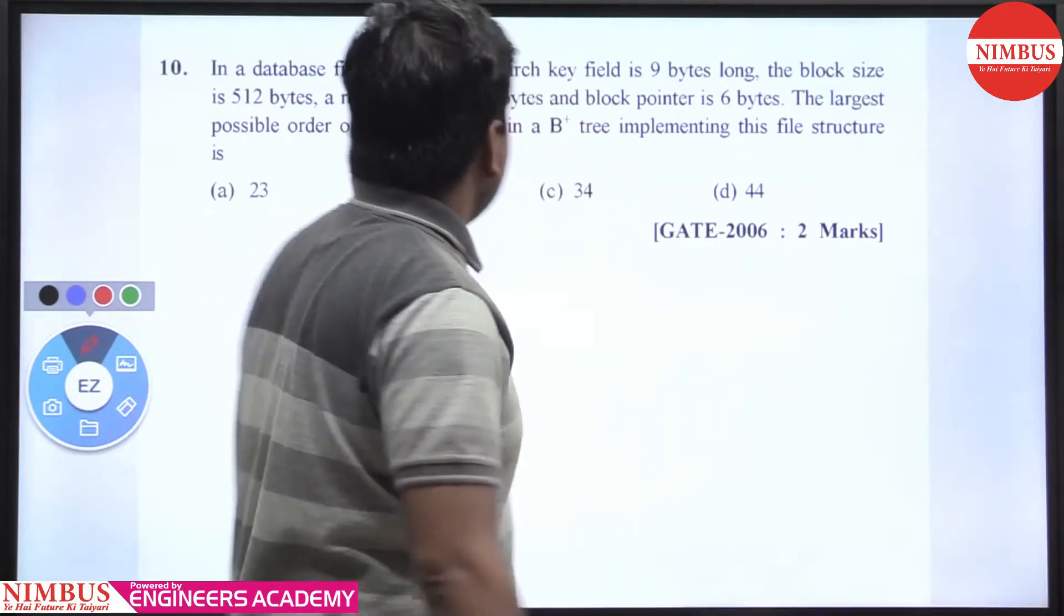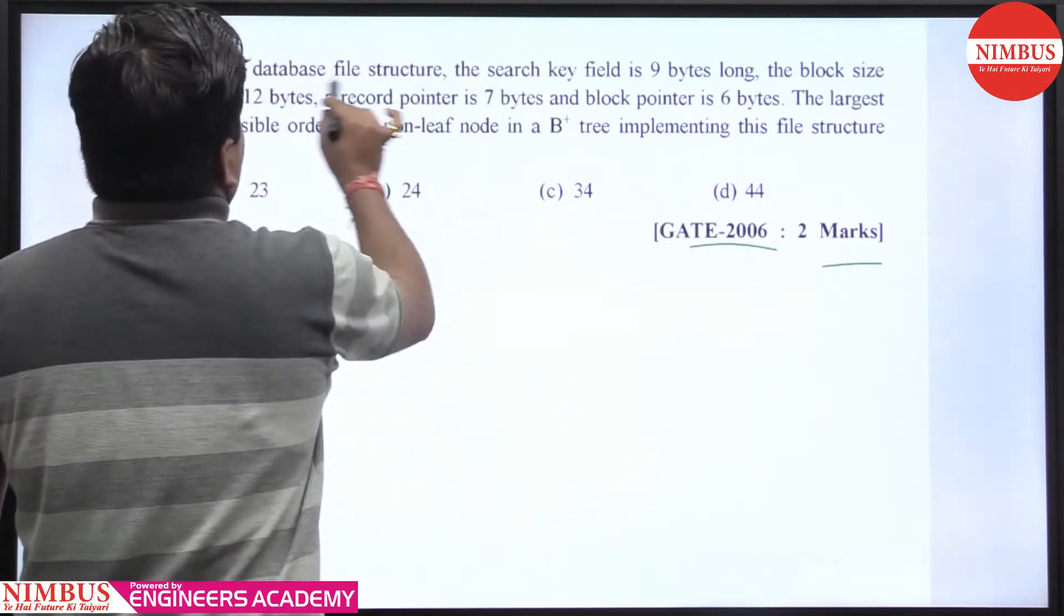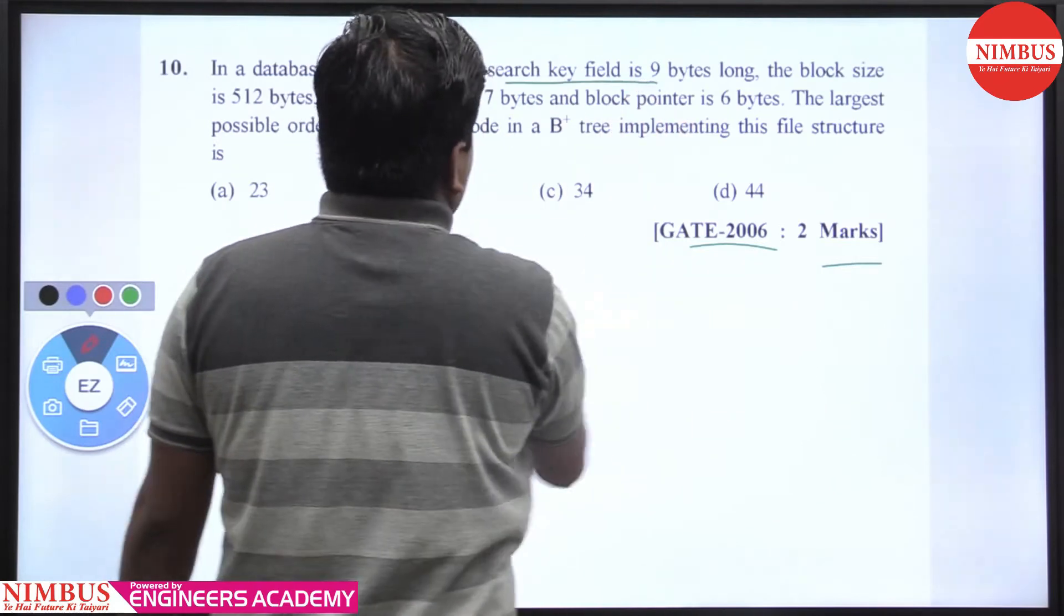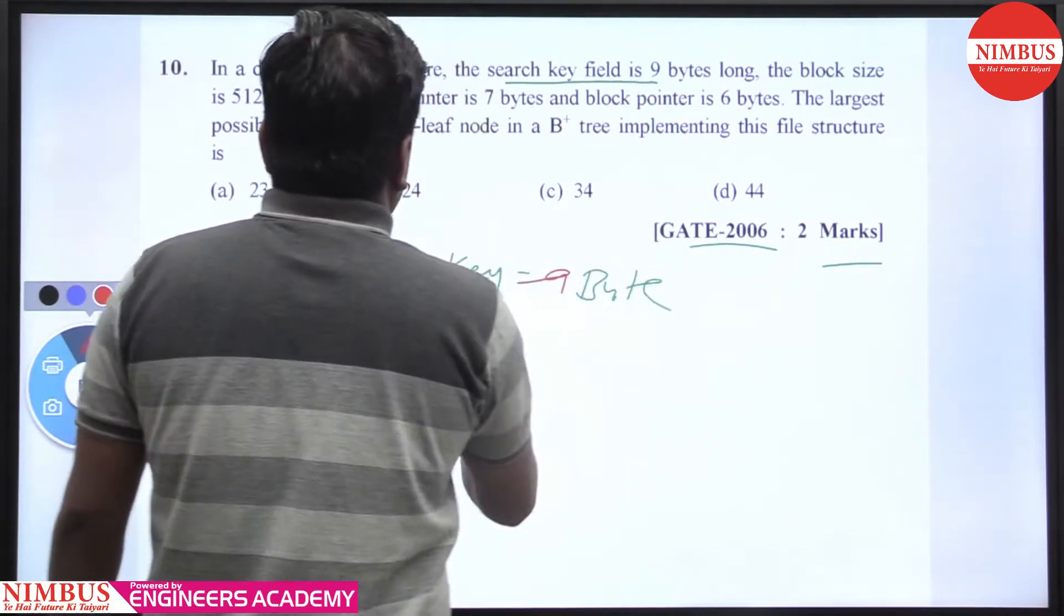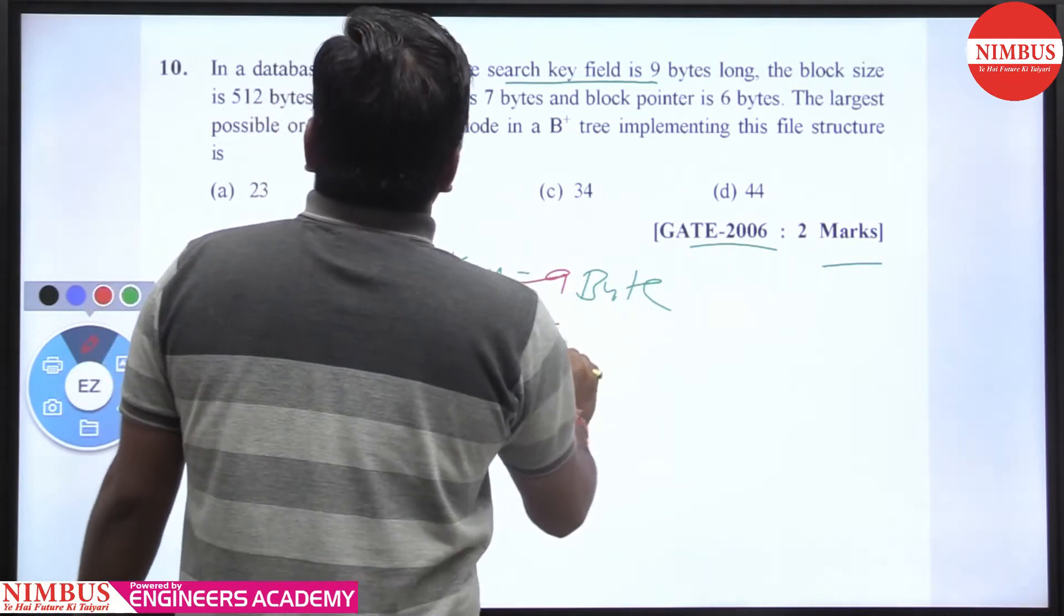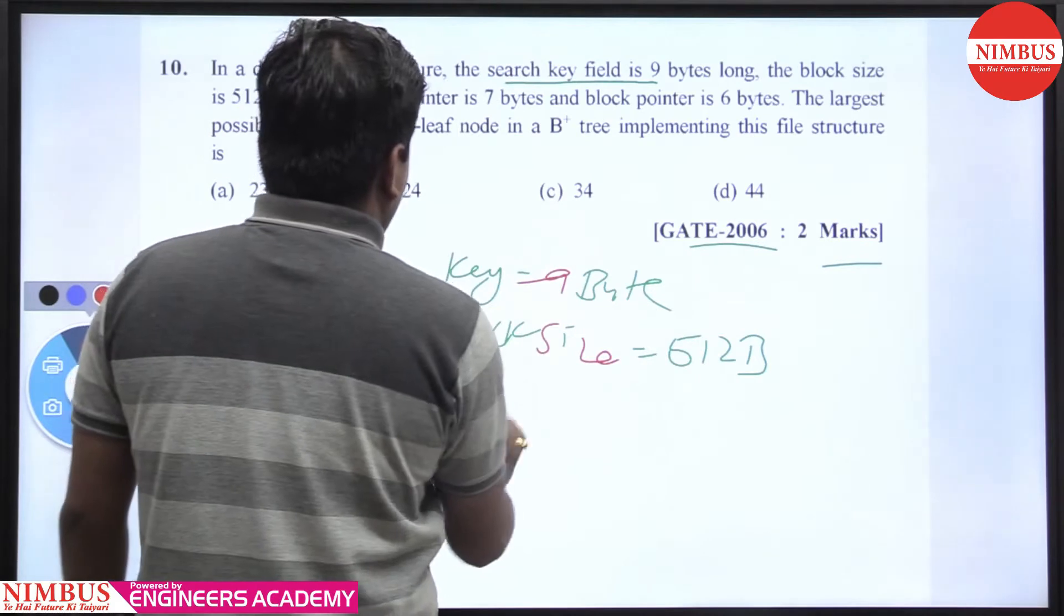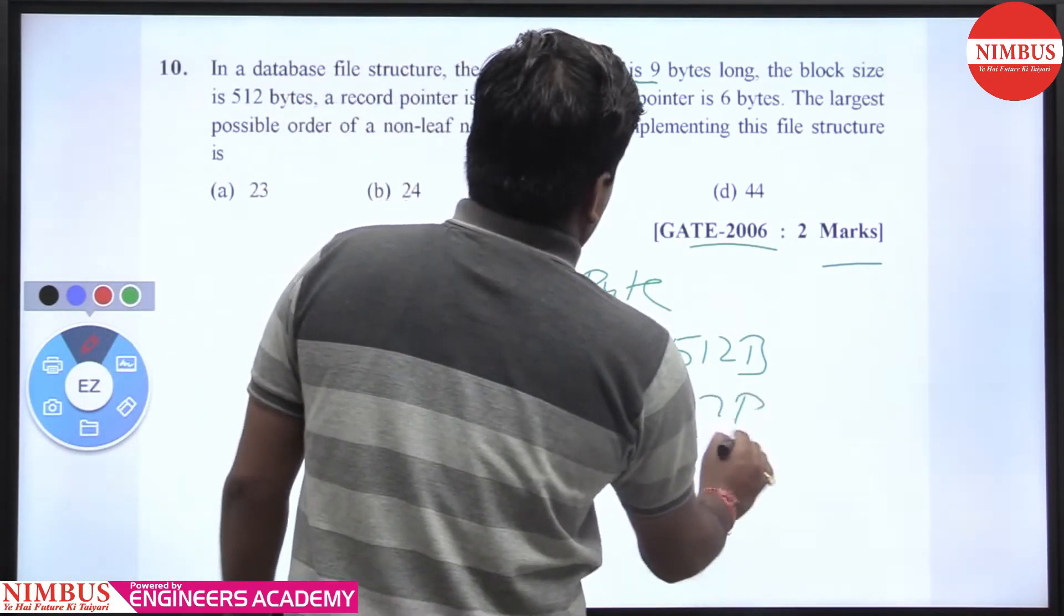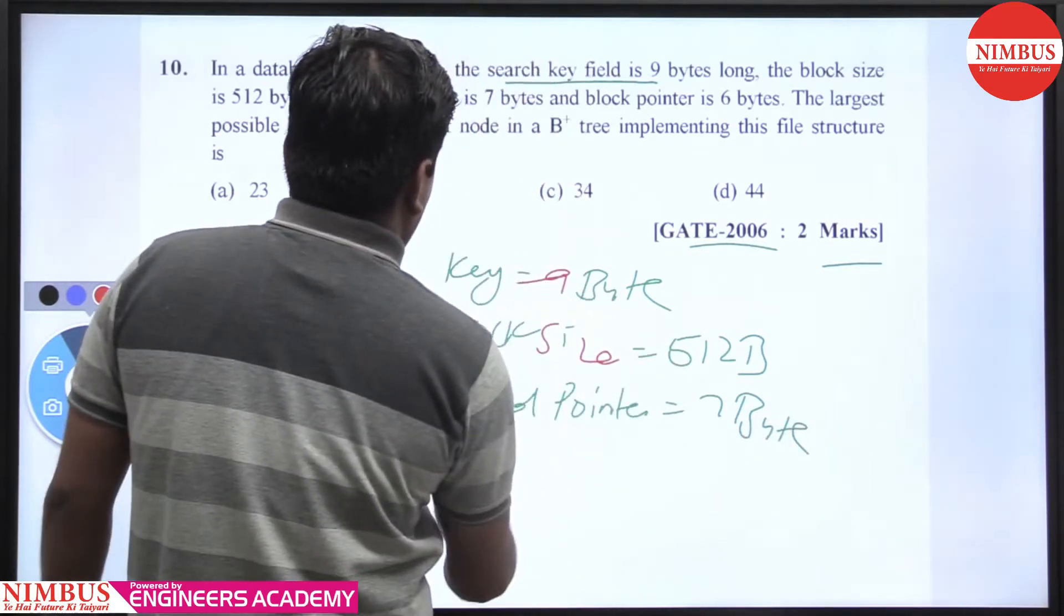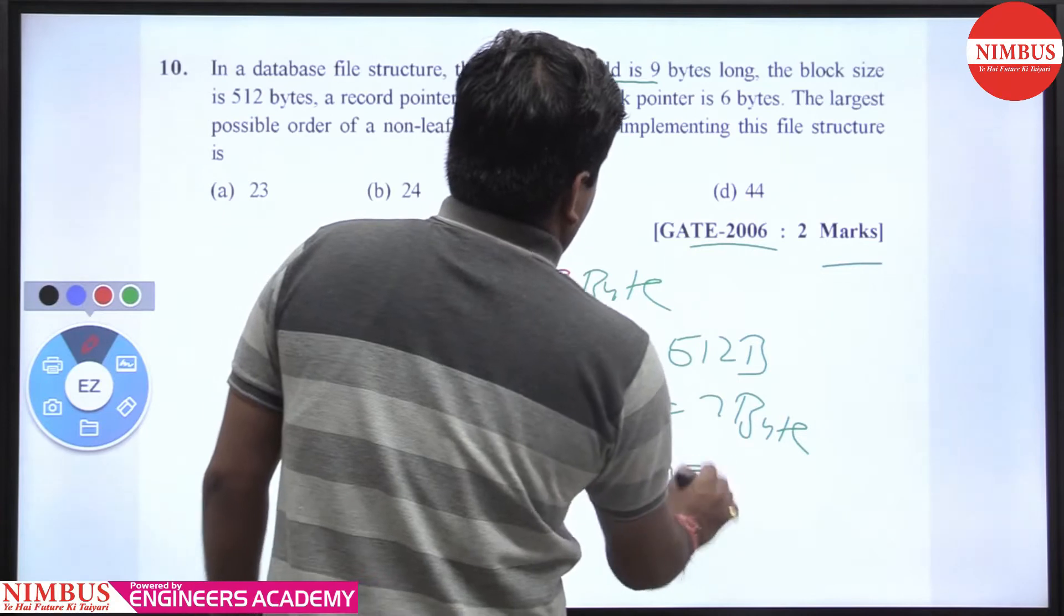Hello student, this is the question Gate 2006, 2 marks. In a database file, the size of key is 9 bytes, key is given 9 bytes, block size is given 512 bytes, and record pointer or record pointer is given 7 bytes, and block pointer is given 6 bytes.